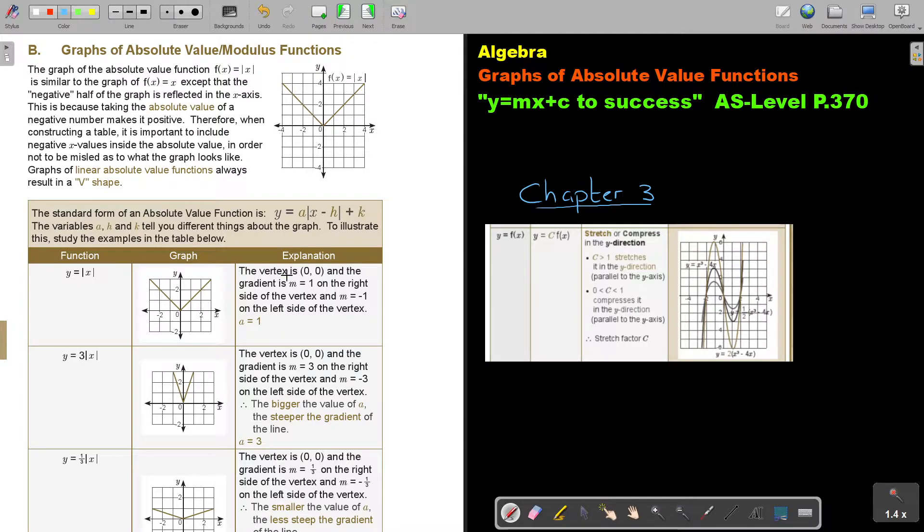So let's start. This is the normal one. The vertex is (0,0) and the gradient is 1 on the right side and m is negative 1 on the left side. Now I start working with that. What happens if I put a 3 in front? If that value was bigger than 1, then it was doing this. It basically stretched in the y direction.